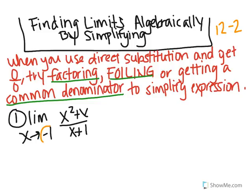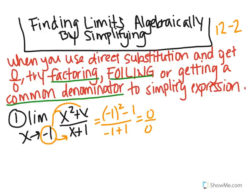You'll notice that if you plug in negative 1 here and also here, you'll end up getting negative 1 squared minus 1 all over negative 1 plus 1, or 0 over 0, which obviously is a problem. So that's when you want to try one of the three methods. Since there's an x in common, I'm going to factor out an x, and I'm left with x plus 1.